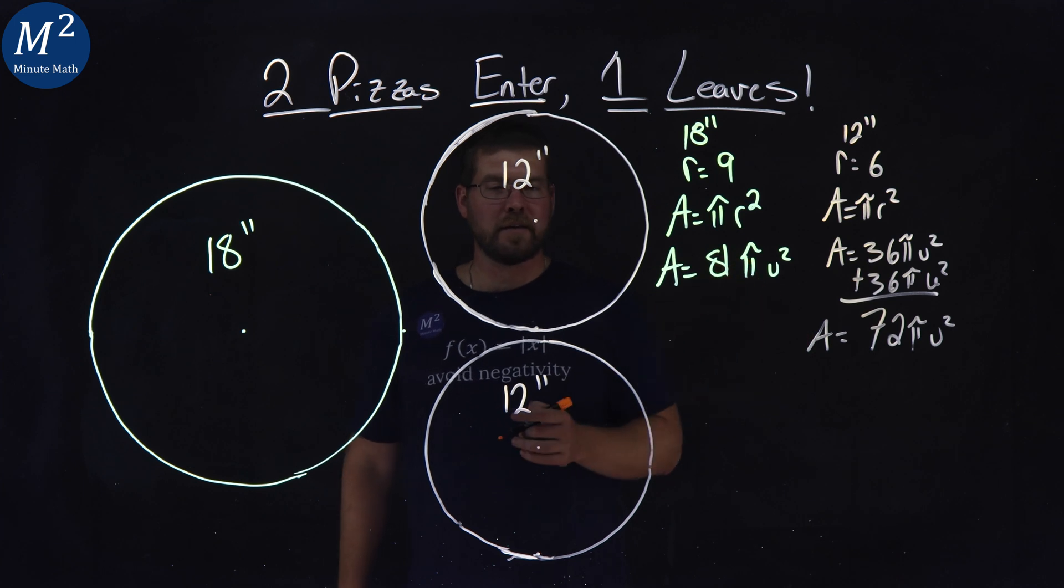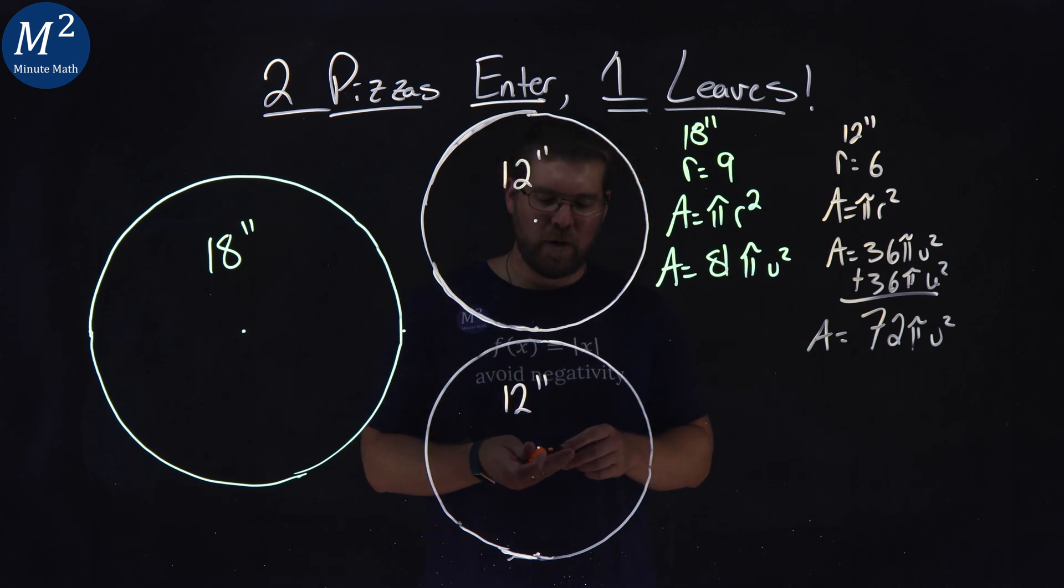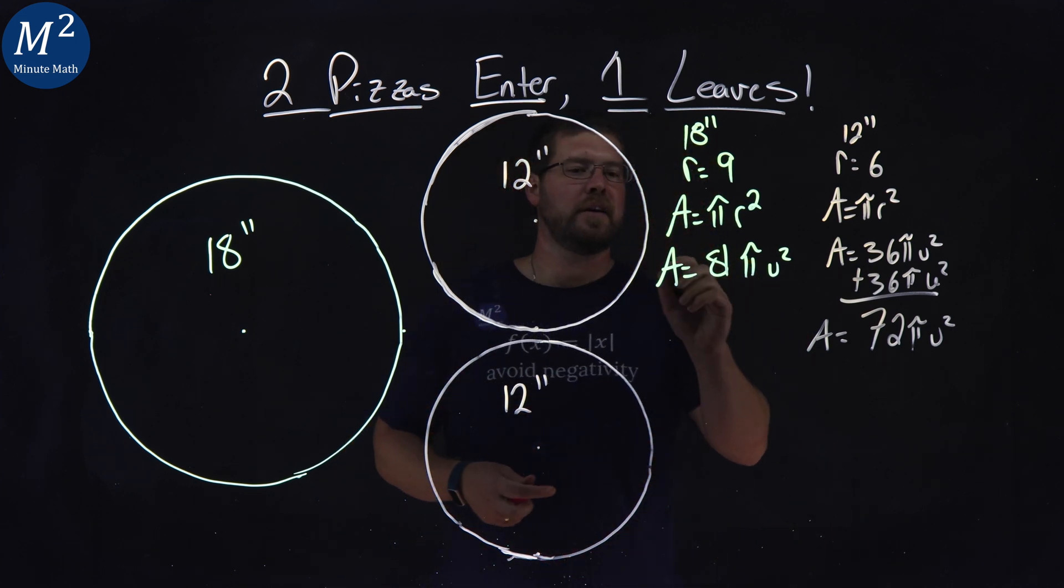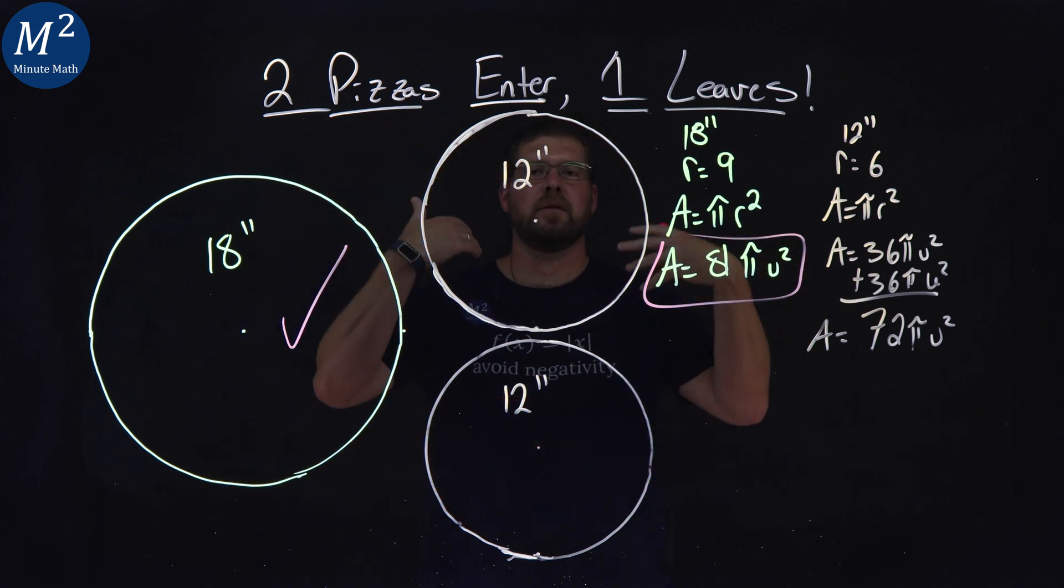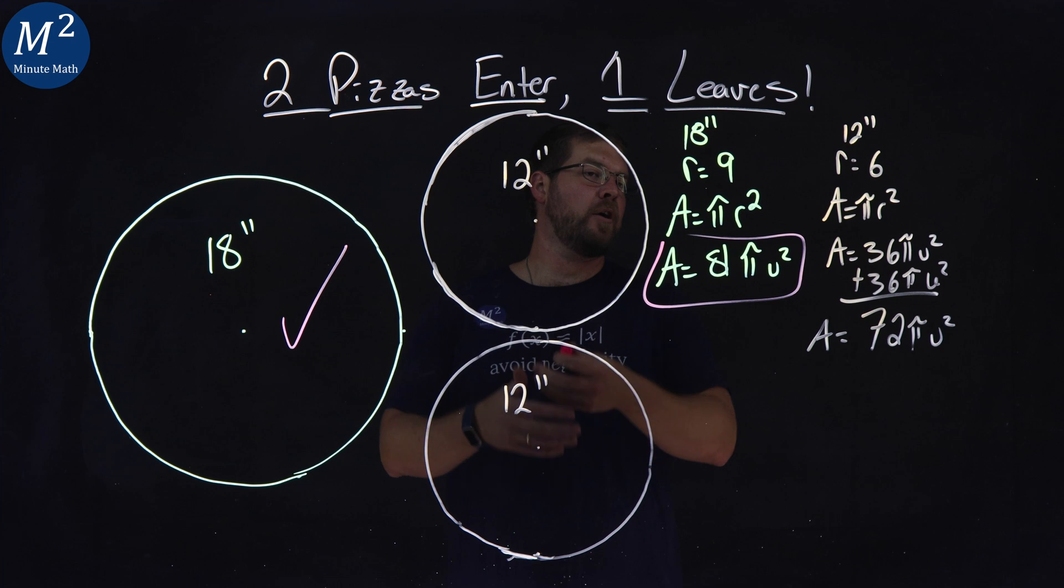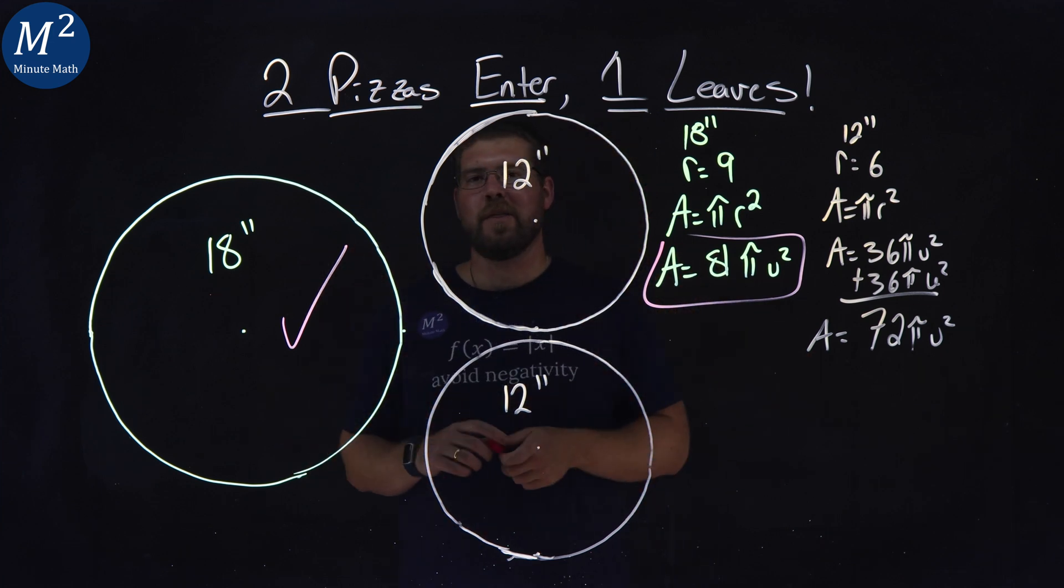Our one pizza is 81 pi units squared. And so the victor here is the 18-inch pizza. That is the larger amount of area.